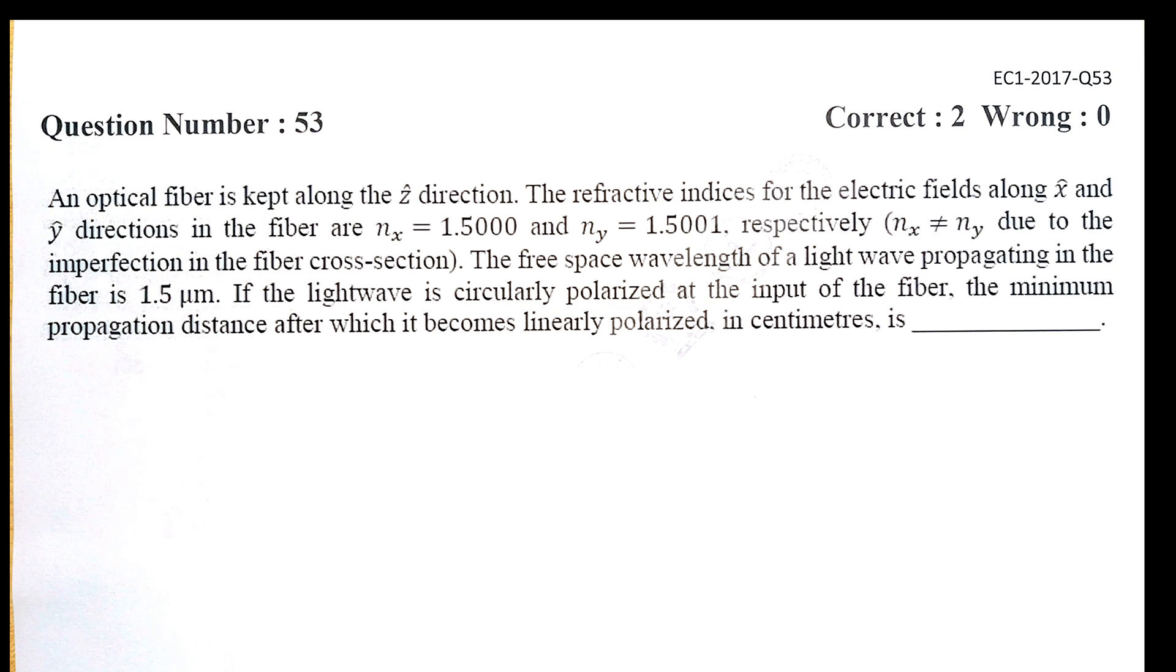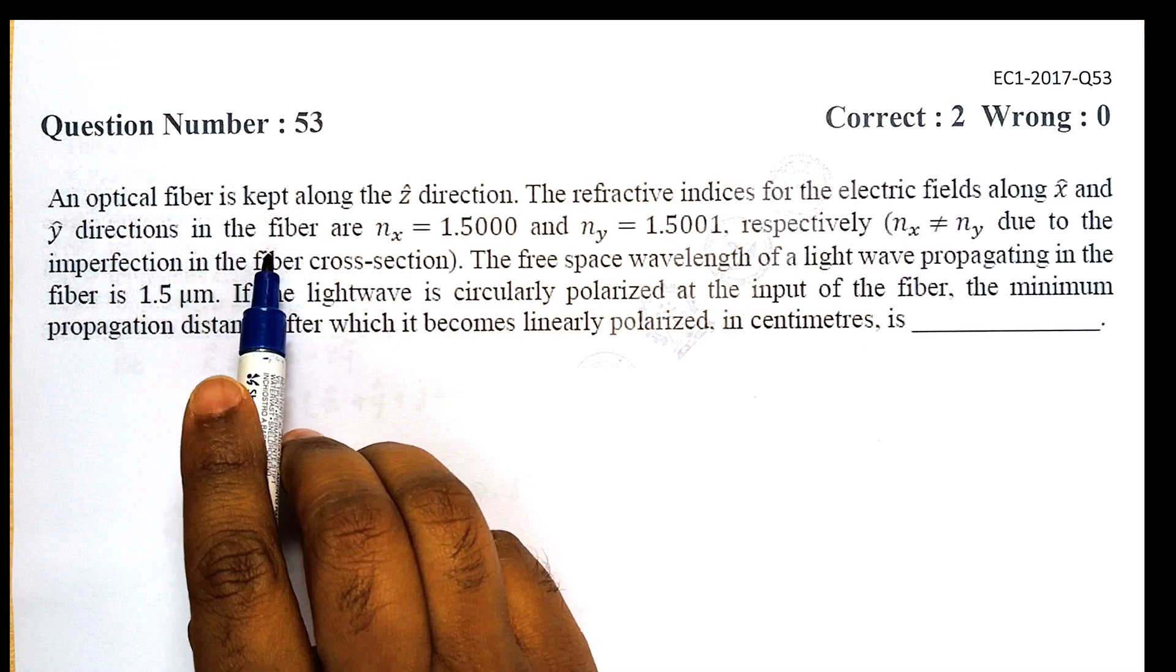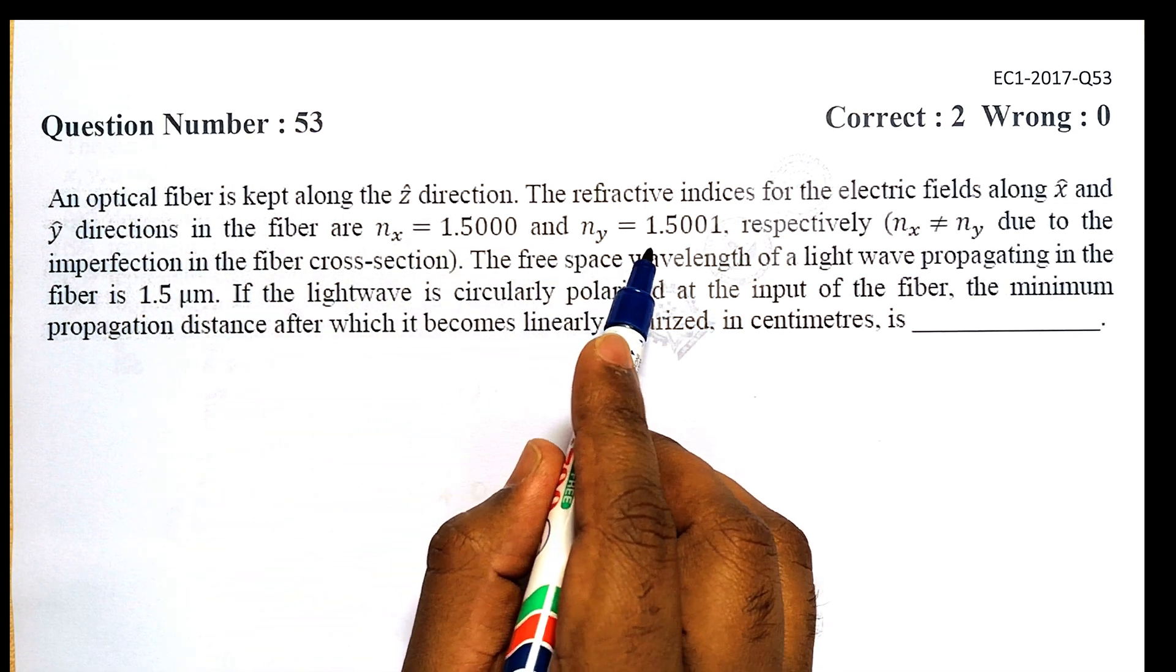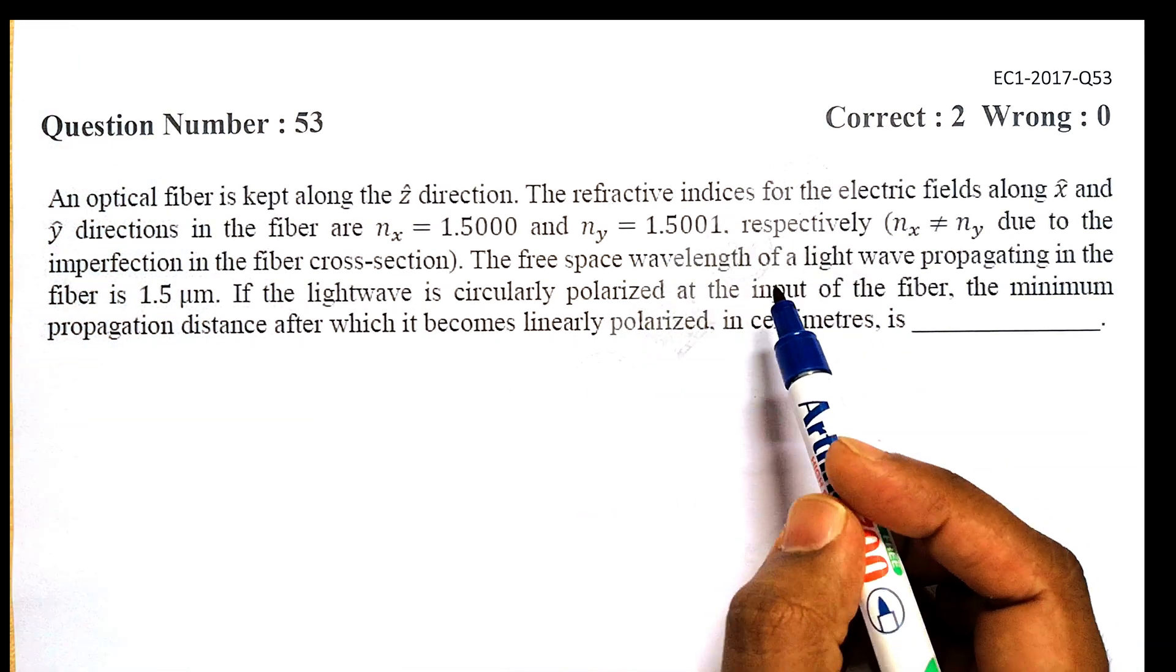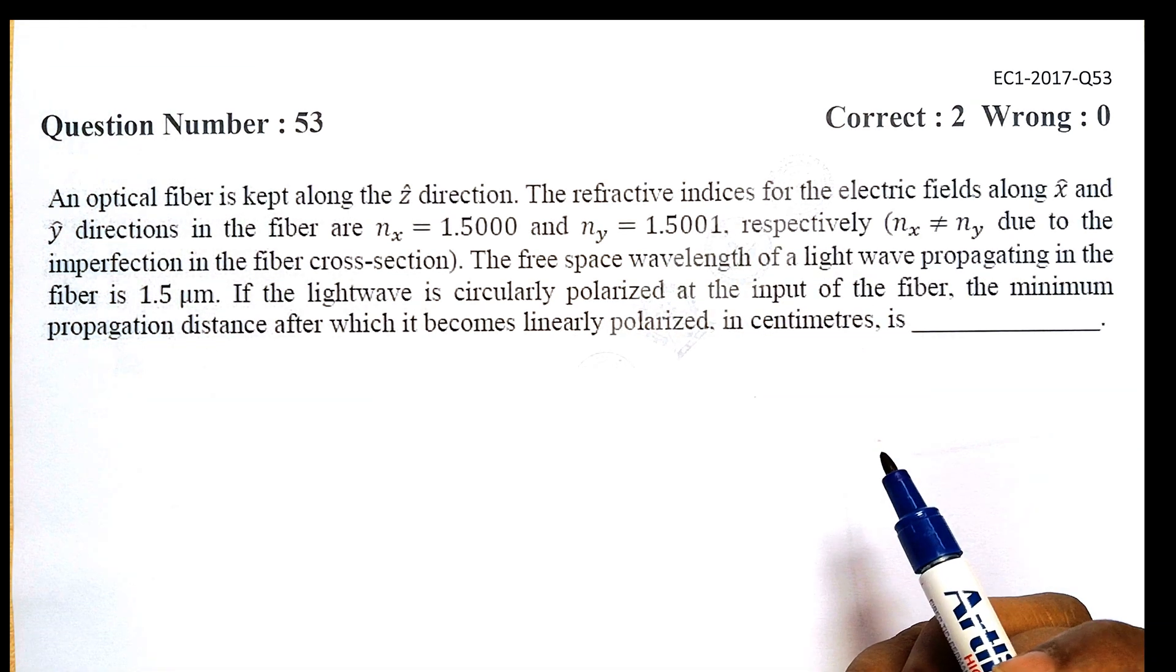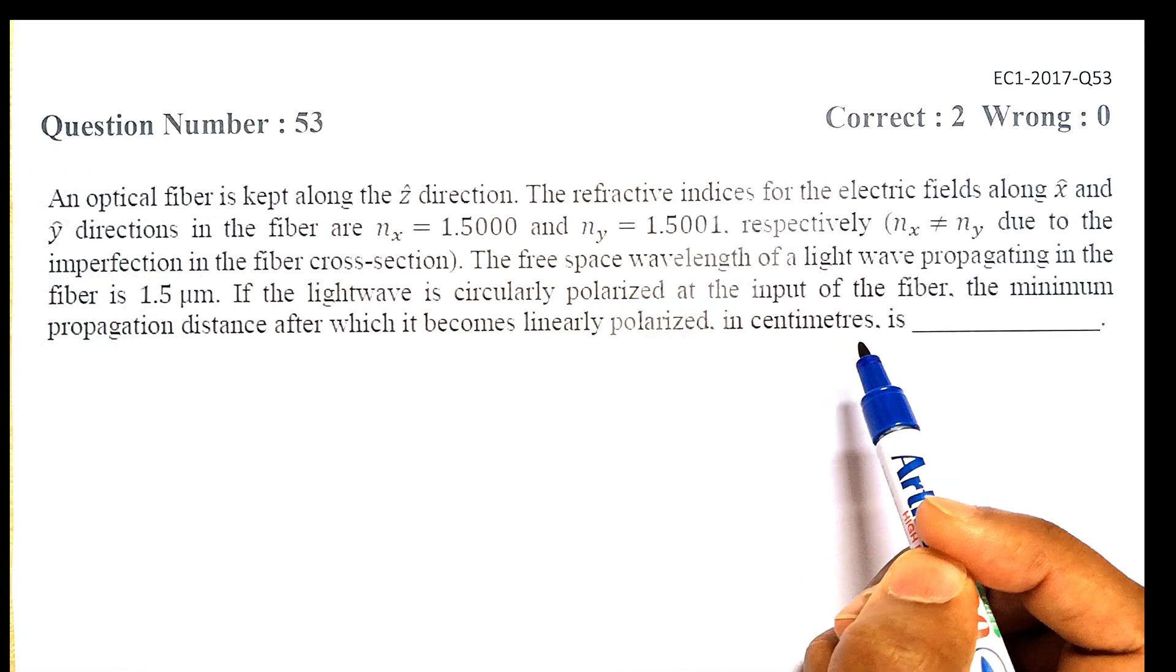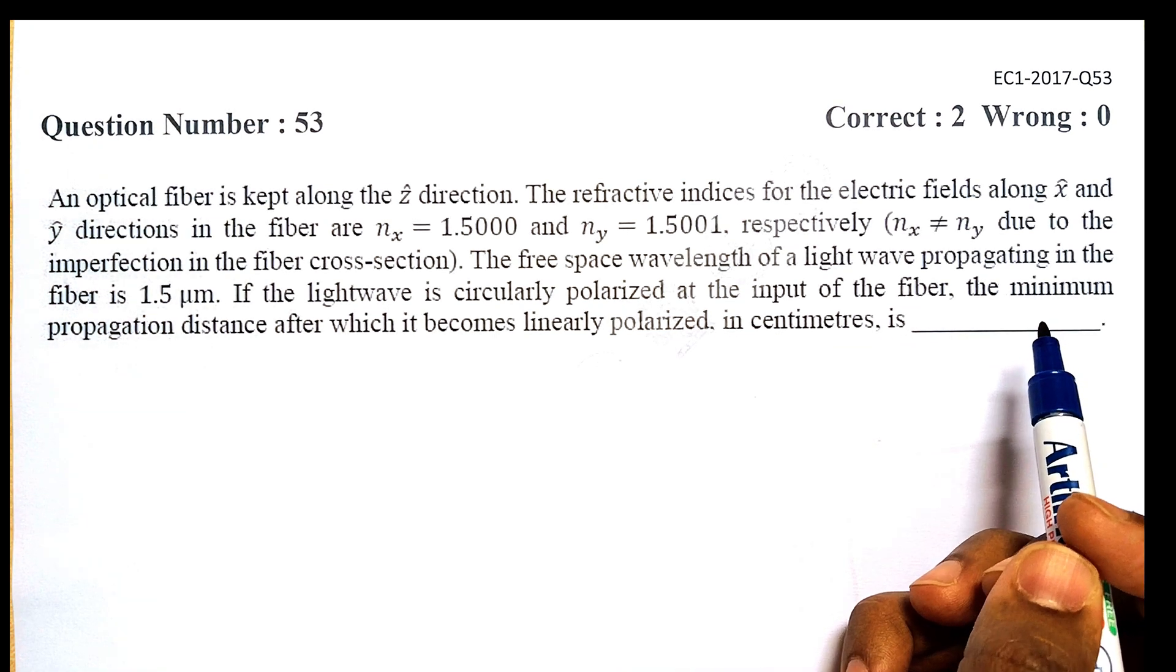So here is the question: An optical fiber is kept along the Z direction. The refractive indices for the electric fields along X and Y directions in the fiber are n_x = 1.5000 and n_y = 1.5001 respectively. The free space wavelength of the light wave propagating in the fiber is 1.5 micron. If the light wave is circularly polarized at the input of the fiber, the minimum propagation distance after which it becomes linearly polarized in centimeters is...